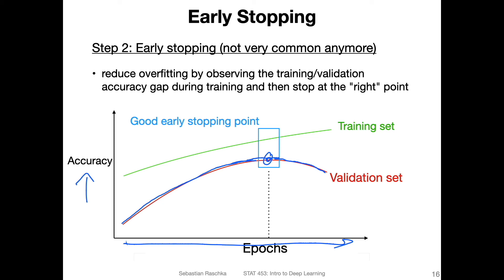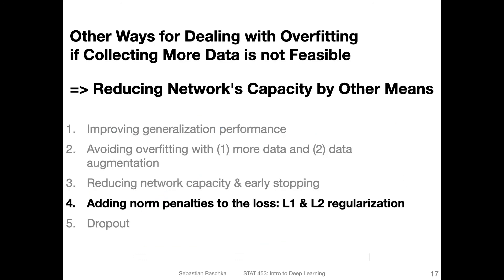In practice, this method is not super common anymore. I would say first try L2 regularization, or even better, using dropout to improve generalization performance. Once you use both techniques and you still find that early stopping helps, then I would consider early stopping — but I would first consider the other two techniques I'm going to present in the next two videos. That said, this is also a useful technique to know about. In the next video, I want to show you L2 regularization, which is essentially a penalty against complexity, and then we will get to the main topic: dropout.